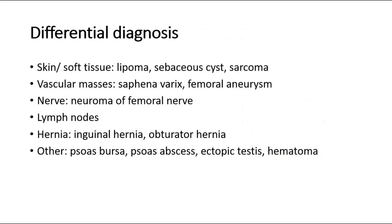The differential diagnoses for groin lumps include: skin and soft tissue causes such as lipoma, sebaceous cyst, and sarcoma; vascular masses like saphenovarix or femoral aneurysm; neuroma of the femoral nerve; enlarged lymph nodes; other hernias such as inguinal or obturator hernia; and other causes like abscess or hematoma.